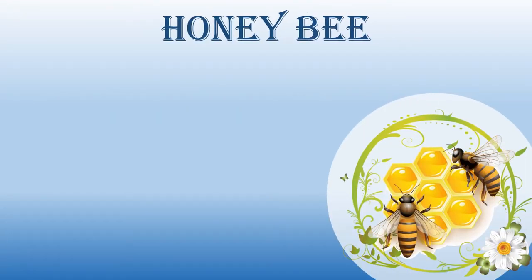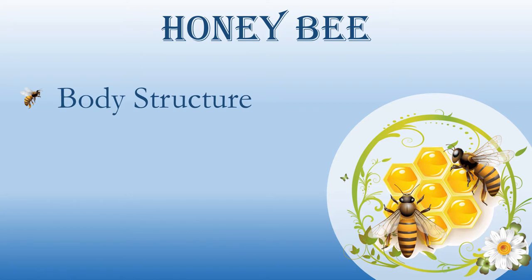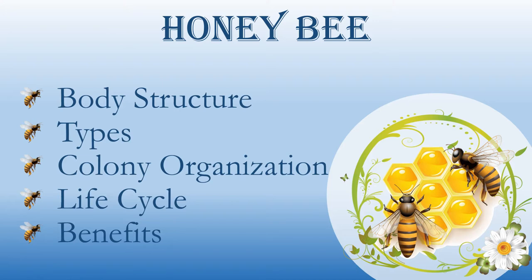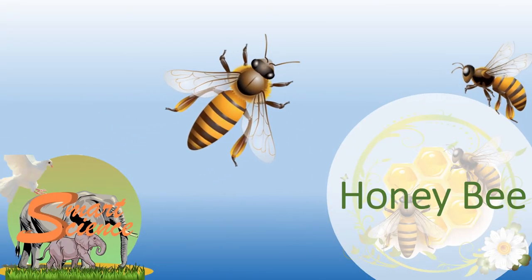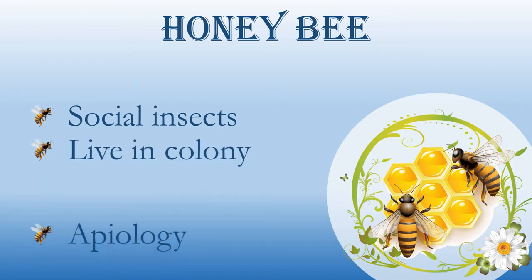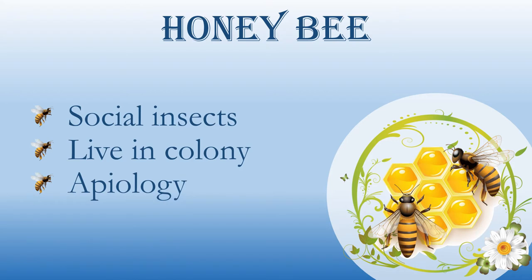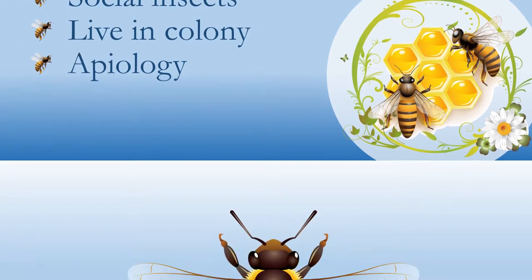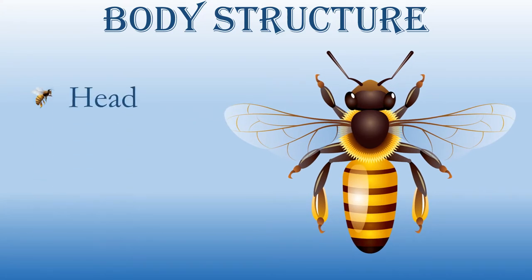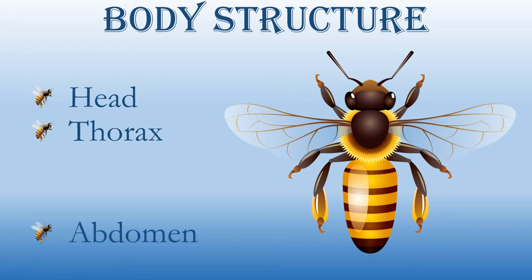Welcome to the channel Smart Science. Honeybees are also called social insects — they live in colonies. The study of honeybees is known as apiology. The body structure of a honeybee is divided into three parts: head, thorax, and abdomen.